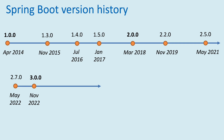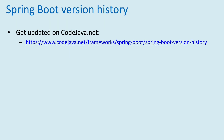The next major version, Spring Boot 3.0.0, came in November 2022. The 3.1 branch first version, 3.1.0, was released in May 2023. As of September 2023, the latest version of Spring Boot is 3.1.3, which was released in August 2023.